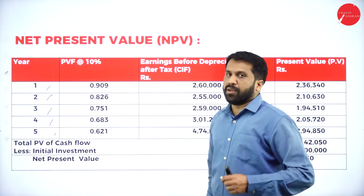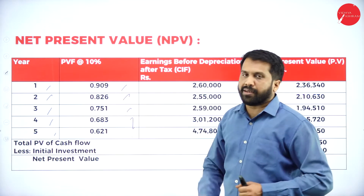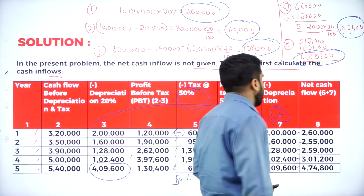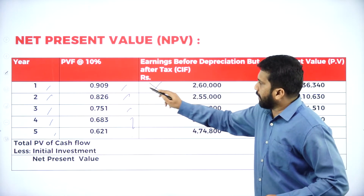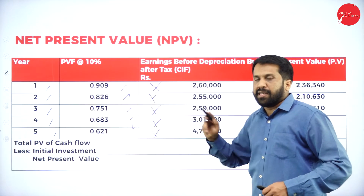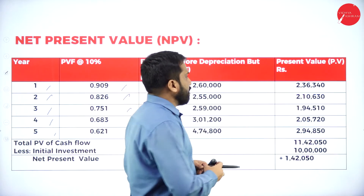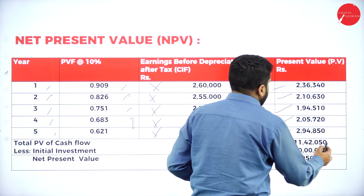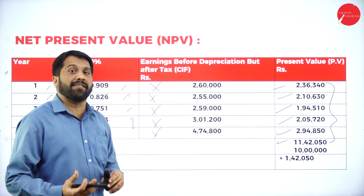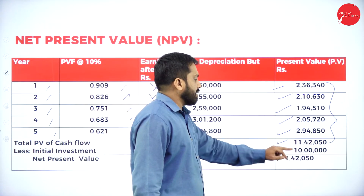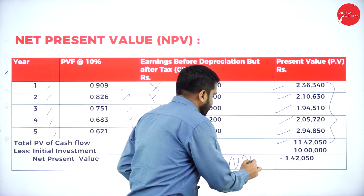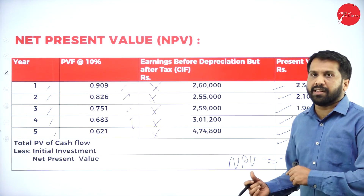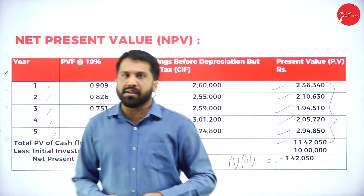Now find the present value for each year at the 10 percent discount factor. The net cash flows are approximately: 2 lakh 60, 2 lakh 55, 2 lakh 59. Multiply each by the discount factor. The present values sum to 11 lakh 42 thousand 50. Your investment is 10 lakh, so NPV = 11 lakh 42 thousand 50 minus 10 lakh = 1 lakh 42 thousand 50.